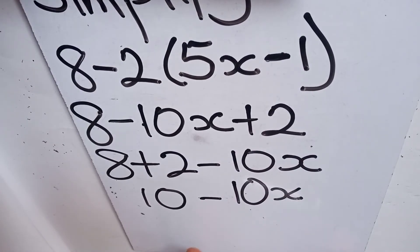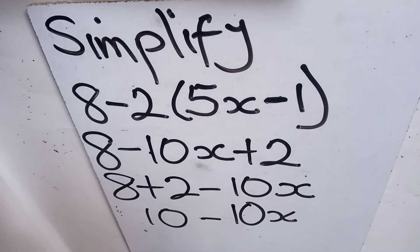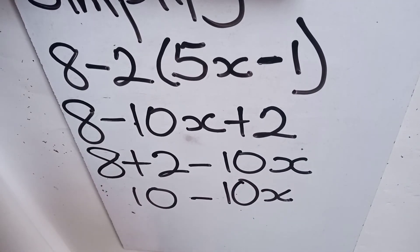So this becomes our simplified form of the given expression 8 minus 2 multiplying 5x minus 1. The answer is 10 minus 10x.